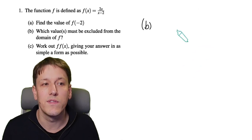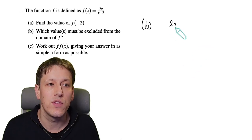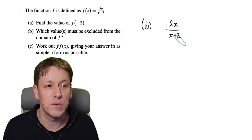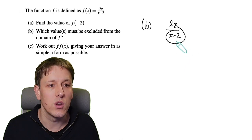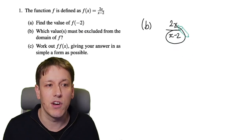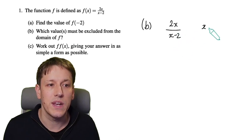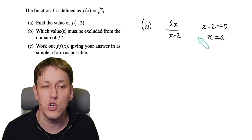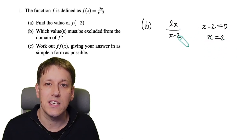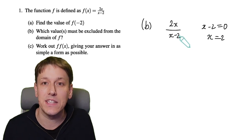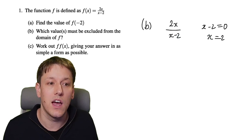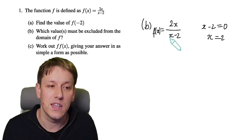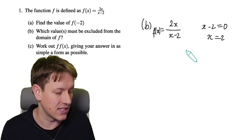Part b asks what values of x we have to exclude from the domain. With the definition 2x / (x - 2), the problem is in the denominator. We can't let that denominator be 0 — it doesn't make sense. So when x - 2 = 0 we have a problem; that would be when x = 2. So we need to exclude x = 2 from the domain — the domain means the set of inputs of the function — for this function to be well defined.